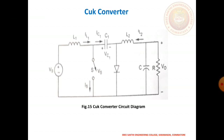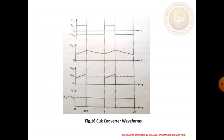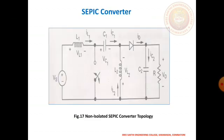As the load current flows continuously during either clock cycle by suitable coupling of the input and output inductors, the input and output ripple current is very small. In general, the Cuk converter is based upon capacitive energy transfer. The output of the Cuk converter is a buck-boost with polarity reversal. These are the corresponding waveforms.